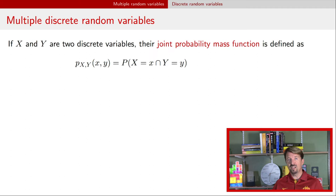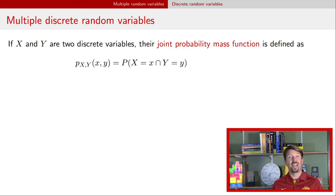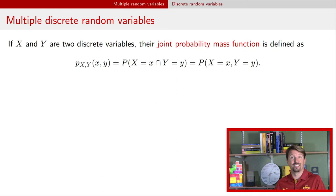If we have two discrete random variables, let's call them x and y, we have something called the joint probability mass function, here denoted by that lowercase p of x and y. It's a function of particular values x and y, and it tells you the probability that the random variable x is equal to the value little x, and that the random variable y is equal to the value little y. Typically we don't write it using the intersection symbol, but instead we use the comma symbol — anytime you see that comma symbol, you should be thinking about it as an intersection or one event and another event.